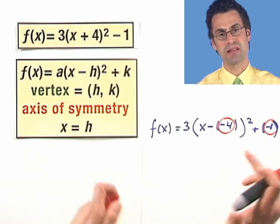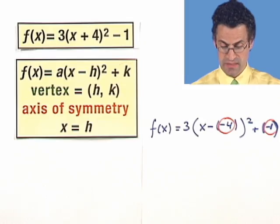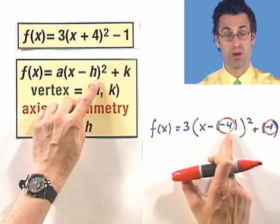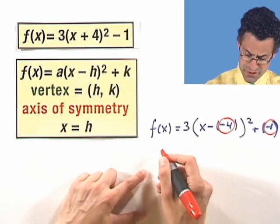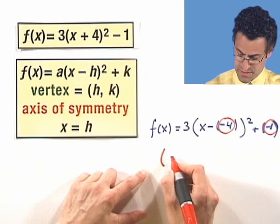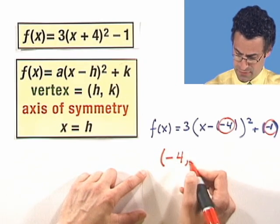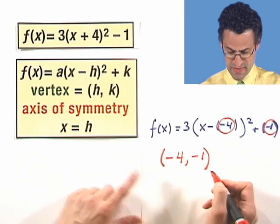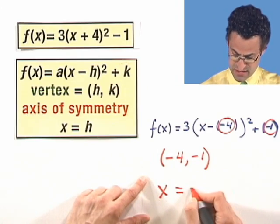I've seen people mess this up a jillion times. The important thing to remember is to always write it as a negative. So the vertex is the point negative 4, negative 1. The axis of symmetry is x equals negative 4. There you go, couldn't be any easier.